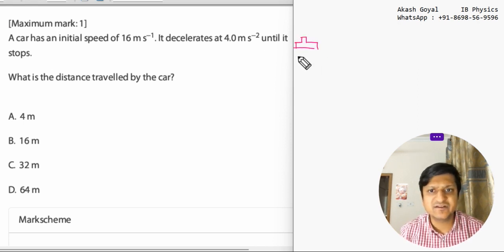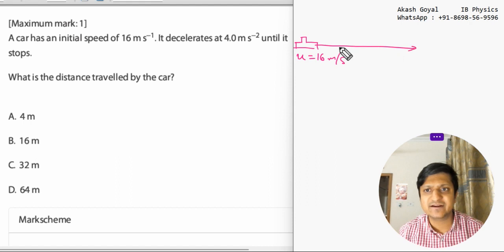which has an initial velocity of 16 meter per second and it is decelerating, means the velocity is getting gradually decreased. So the acceleration is minus 4 meter per second square until it stops, means v equals to zero.